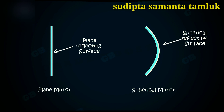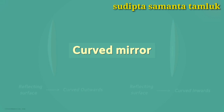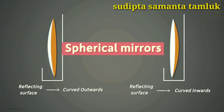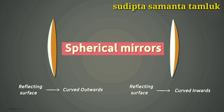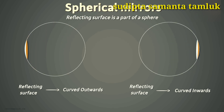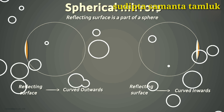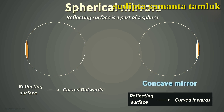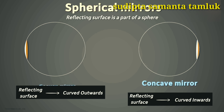Think about spherical mirrors with the help of a spoon. A spoon is a good approximation of a curved mirror. A spoon has two reflecting surfaces: one curved inside and the other curved outside. They are called spherical mirrors because their reflecting surface is a part of a sphere. The mirror with its reflecting surface curved inwards is called a concave mirror, and the mirror with its reflecting surface curved outwards is called a convex mirror.